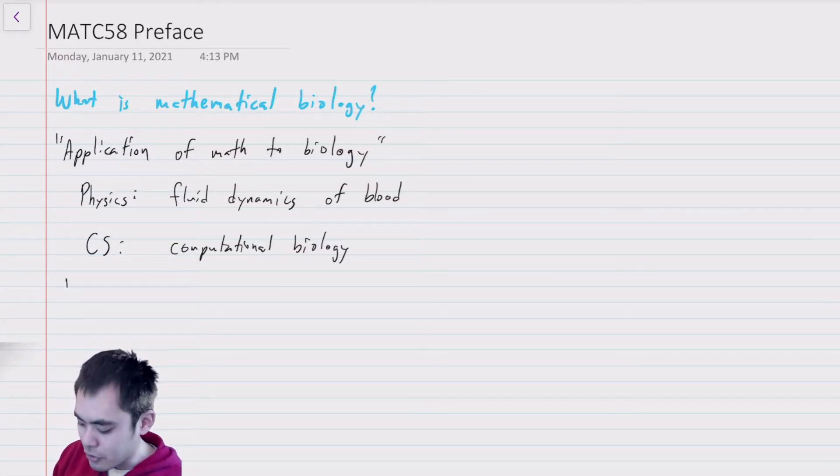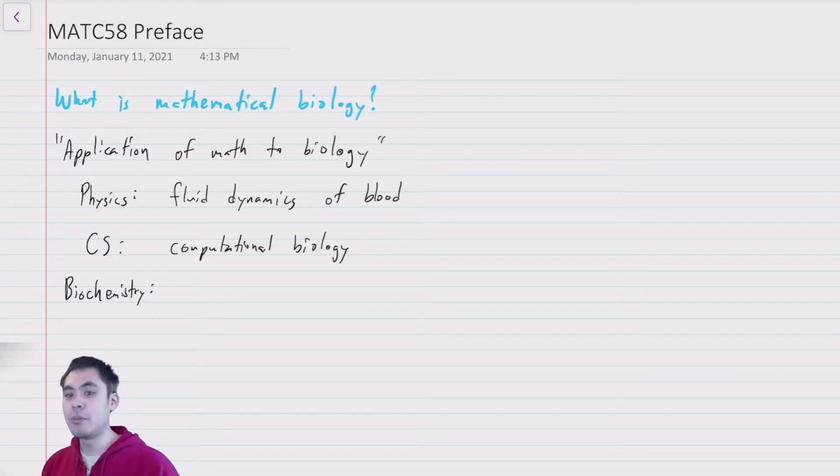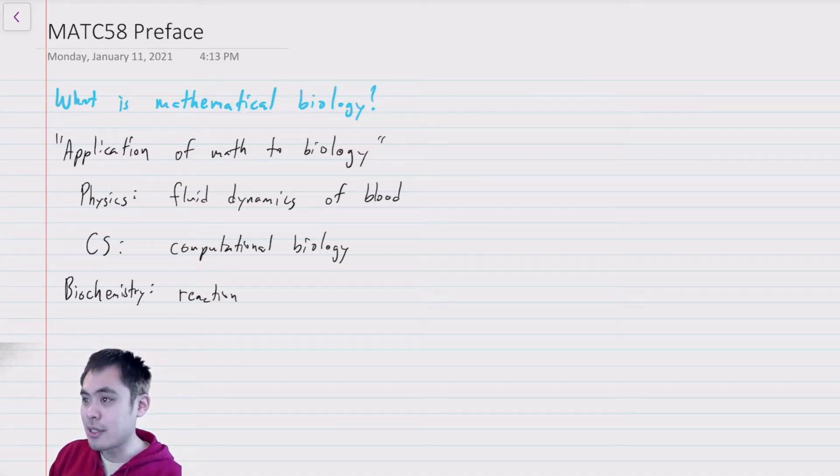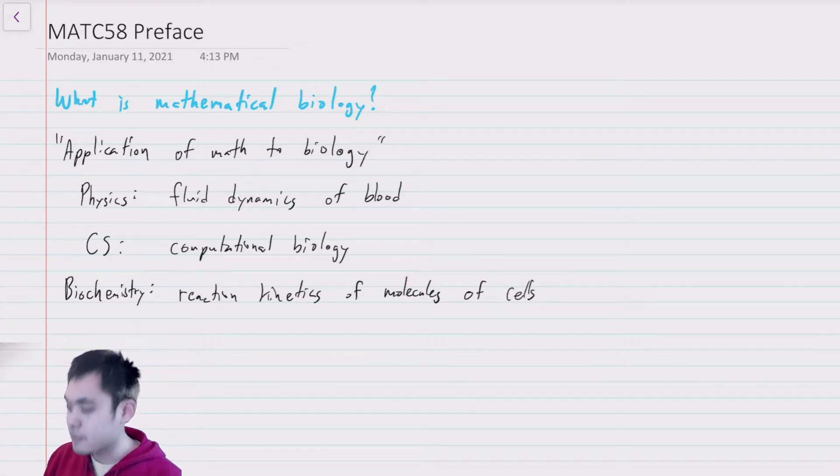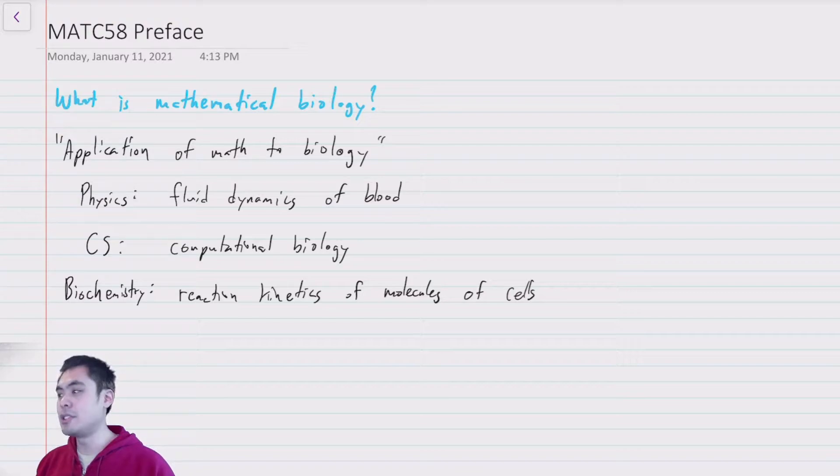And to give a final example, we also often use biochemistry in modeling biological systems. For example, the reaction kinetics of molecules within cells. That's something that we can model, but we are going through this intermediary of using chemistry. So the definition of biology is extremely broad and we obviously can't cover all of it in one course.